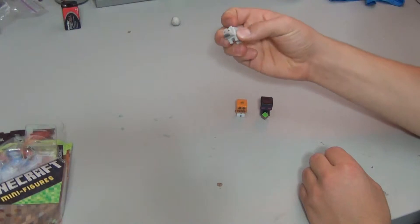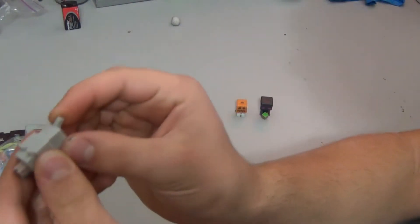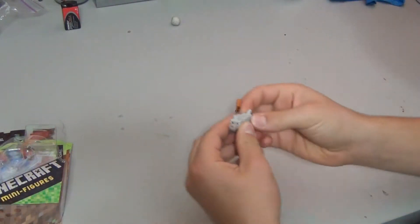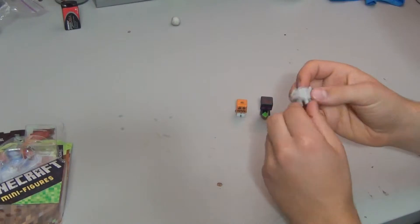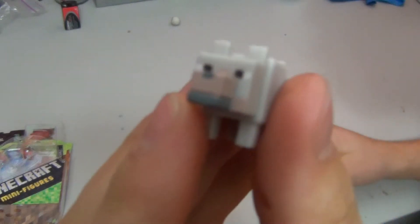First off, these are not squishy. They're not like trash packs or squinkies. They're a hard rubber, if you can hear that. I'll bend the dog's tail a little bit—you can see. They are a hard rubber, and I will definitely say that the detail on these things is pretty amazing actually. They got this guy pretty good.